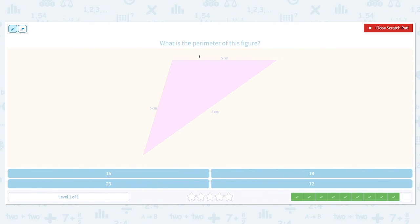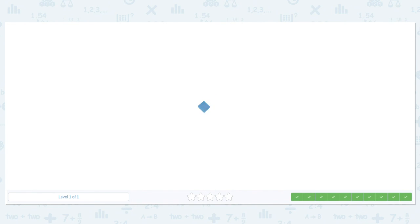Let's do one more. Triangle. We have 5, 8, and 5. I like my friends of 10. So 5 and 5 is 10. And then I bring down my 8. 10 plus 8 equals 18. So my perimeter is 18 centimeters. Great job doing perimeter.